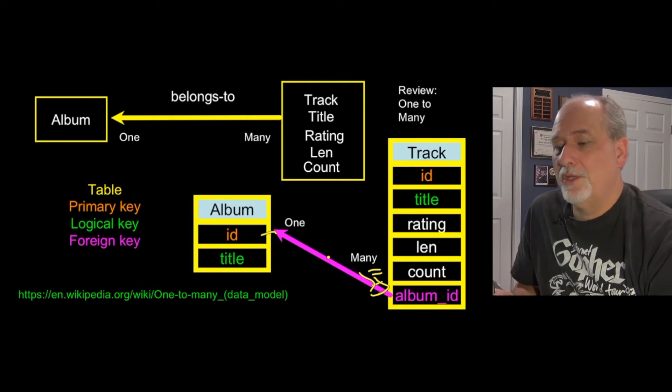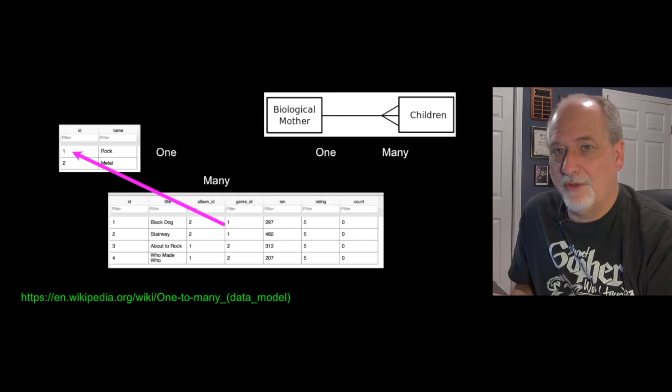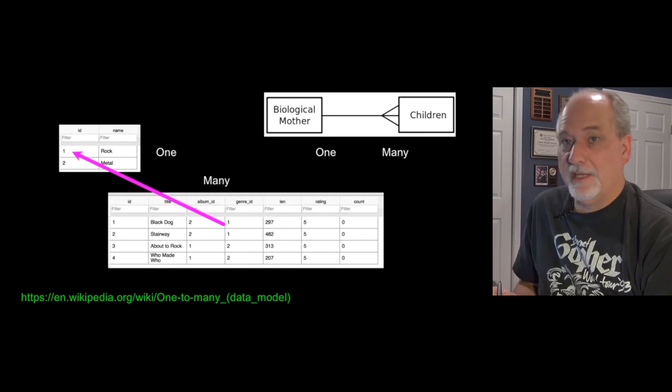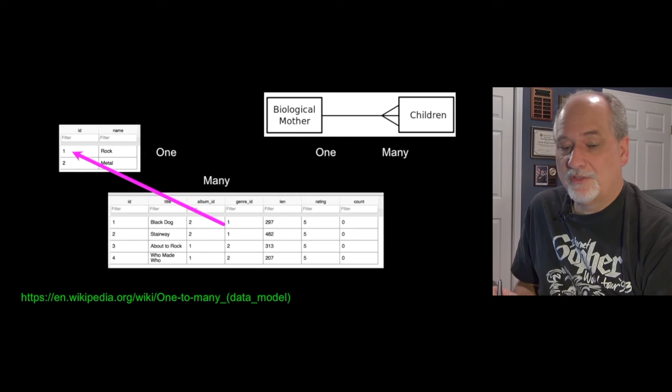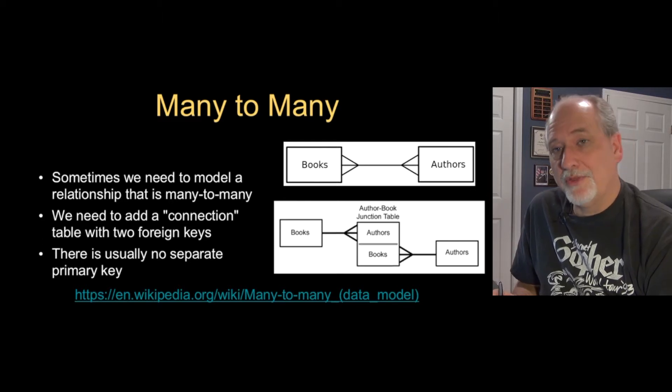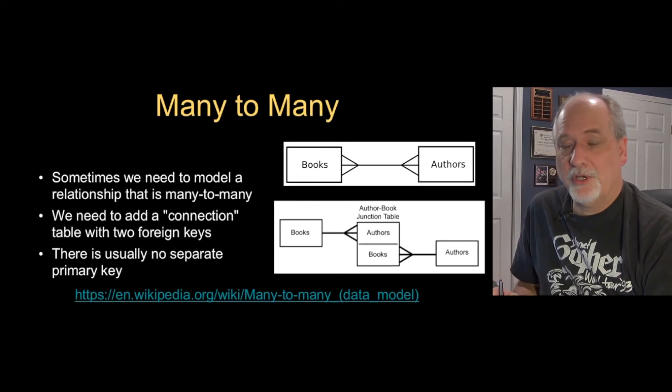But there are times when you just can't model things with a one-to-many relationship. Like if you have a mother and children, that's a many-to-one relationship and it works fine. But sometimes you have a many-to-many relationship in that there might be many books - one book has many authors and each author has many books. You don't have the one side, there's no one.